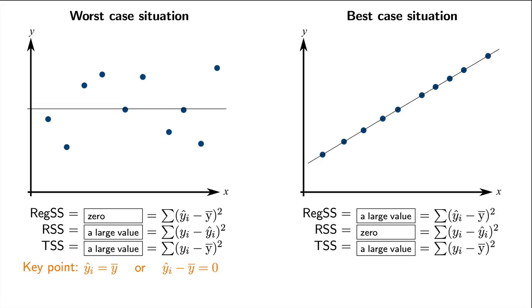The total sum of squares, TSS, for this case is the same large positive value as RSS, because y-hat i is equal to y-bar. So in summary, in the worst-case regression, RSS and TSS are the same numeric values, and the regression sum of squares is zero.